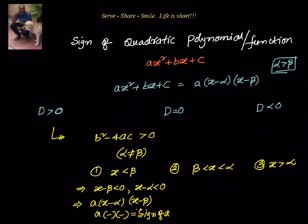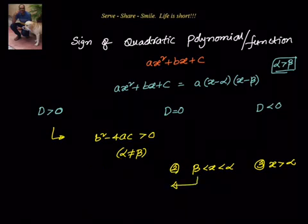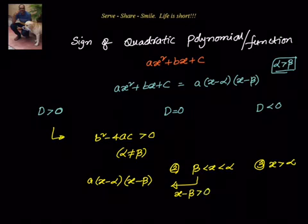Now let us go to the second scenario. In the second scenario, x is greater than beta, so x − beta is greater than zero. And x is less than alpha, so x − alpha is less than zero. So the expression a(x − alpha)(x − beta) becomes a times negative times positive, meaning it is minus of the sign of a.